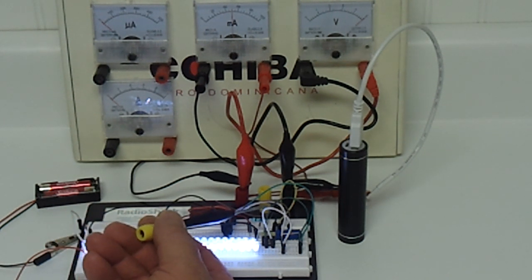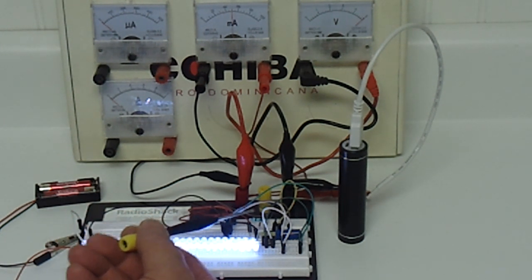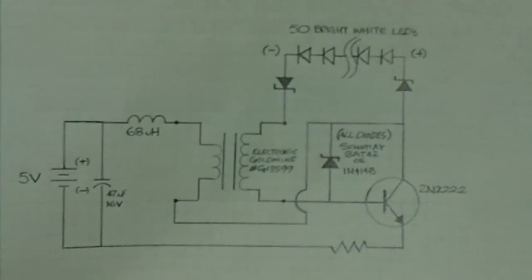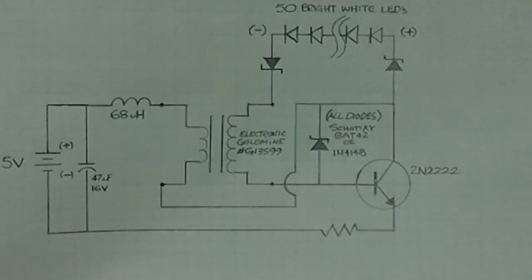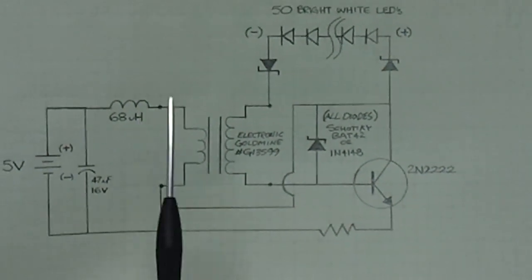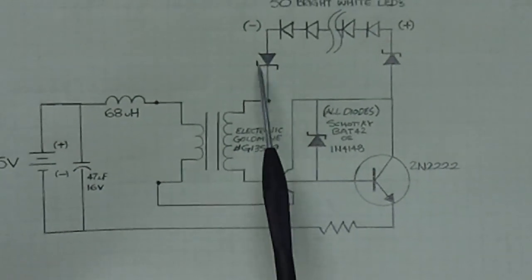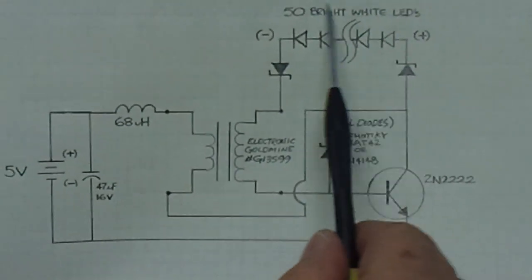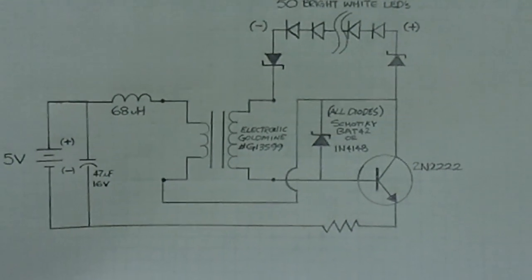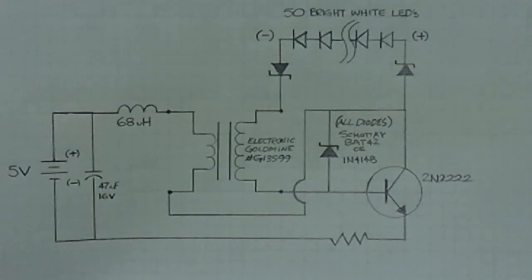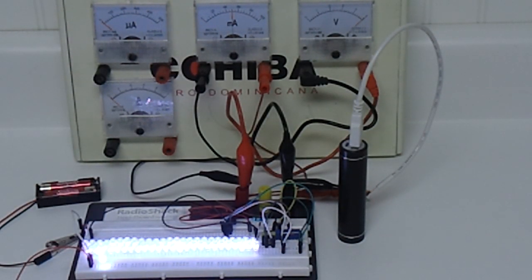So this is my circuit diagram that I've come up with, and I hope you can read that. Inductor, smoothing capacitor, the inverter transformer, three diodes is all I'm using in here, 50 bright white LEDs, and a 2N2222 transistor. So I just thought this was really neat and wanted to share, and I hope you enjoy and have fun. Thank you very much for watching.